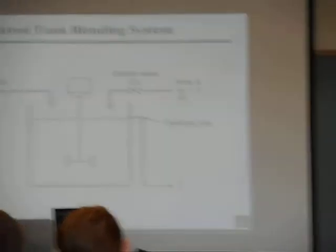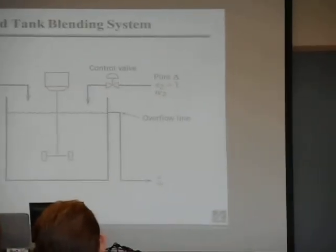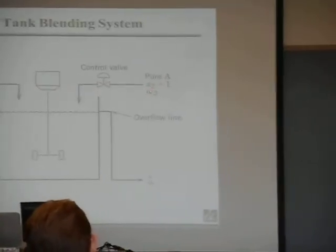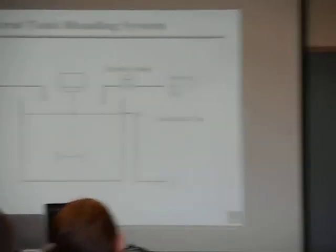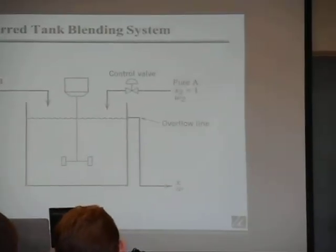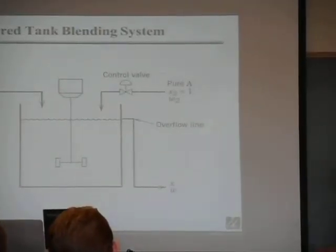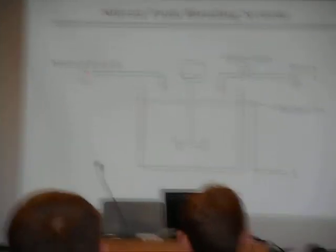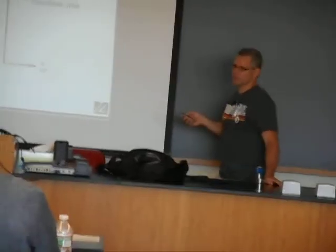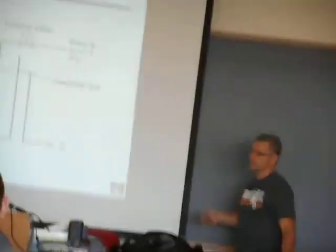So this is pure A, mass fraction of 1, and there's some flow rate here. When you see something like this — a control valve — that implies we can manipulate the flow of that stream. We see no control valve here, which suggests that this flow is whatever load we have. You see a valve over there, that means we can change that flow.